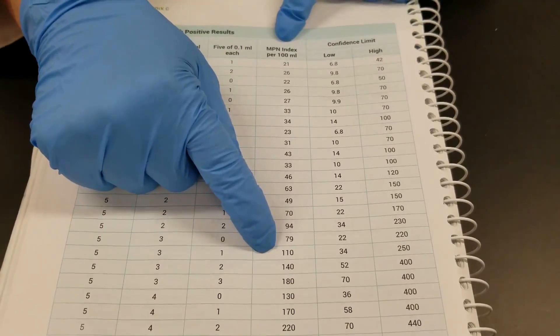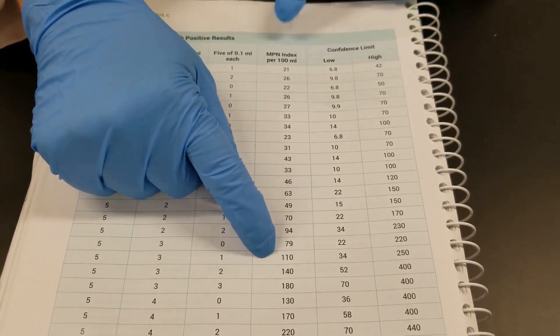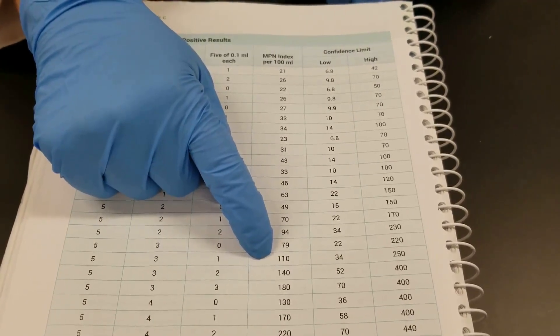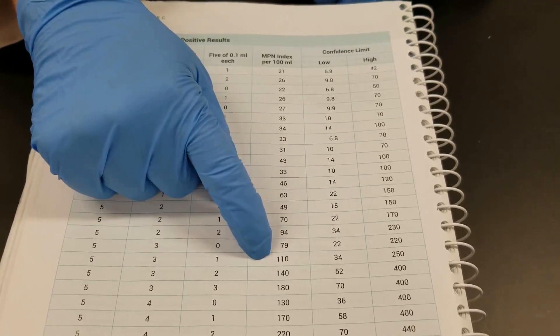That tells you that it's an estimate. That's all it is. It's an estimate that there would be a hundred and ten organisms per hundred mils of water sample.